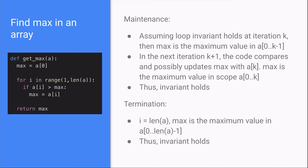Since the loop invariant holds at initialization, maintenance, and termination, it proves that the algorithm get underscore max is correct.